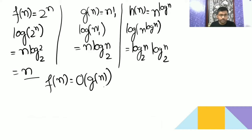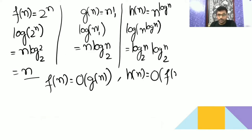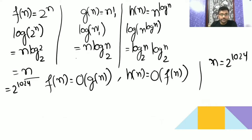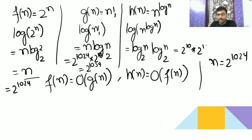Fn is smaller, so Fn is equal to big O of Gn. Now if you take n equal to 2 to the power 1024, here you get 2 to the power 1024 for log Fn, and 2 to the power 1024 times 2 to the power 10, so 2 to the power 1034 for log Gn. For log Hn you get 2 to the power 10 times 2 to the power 10, which is 2 to the power 20. So the smallest term is Hn — Hn is smaller than Fn, and Hn is even smaller than Gn.